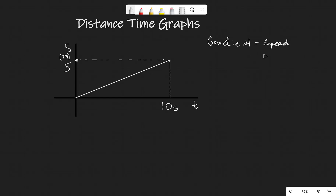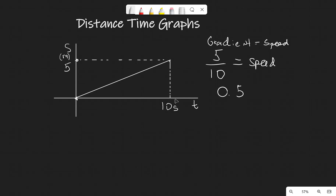In a distance-time graph, we use the gradient to calculate the speed. The gradient equals change in y over change in x. In this example, the y-axis goes from 0 to 5, and the x-axis goes from 0 to 10. So the gradient equals 5 divided by 10, which is 0.5 meters per second.